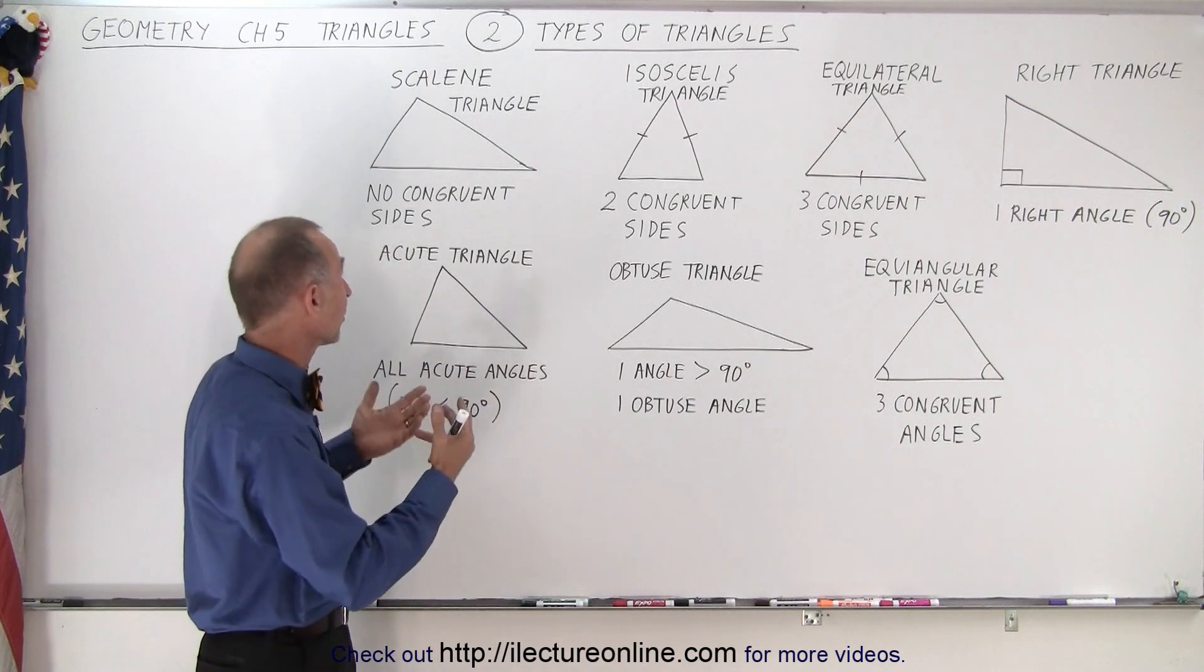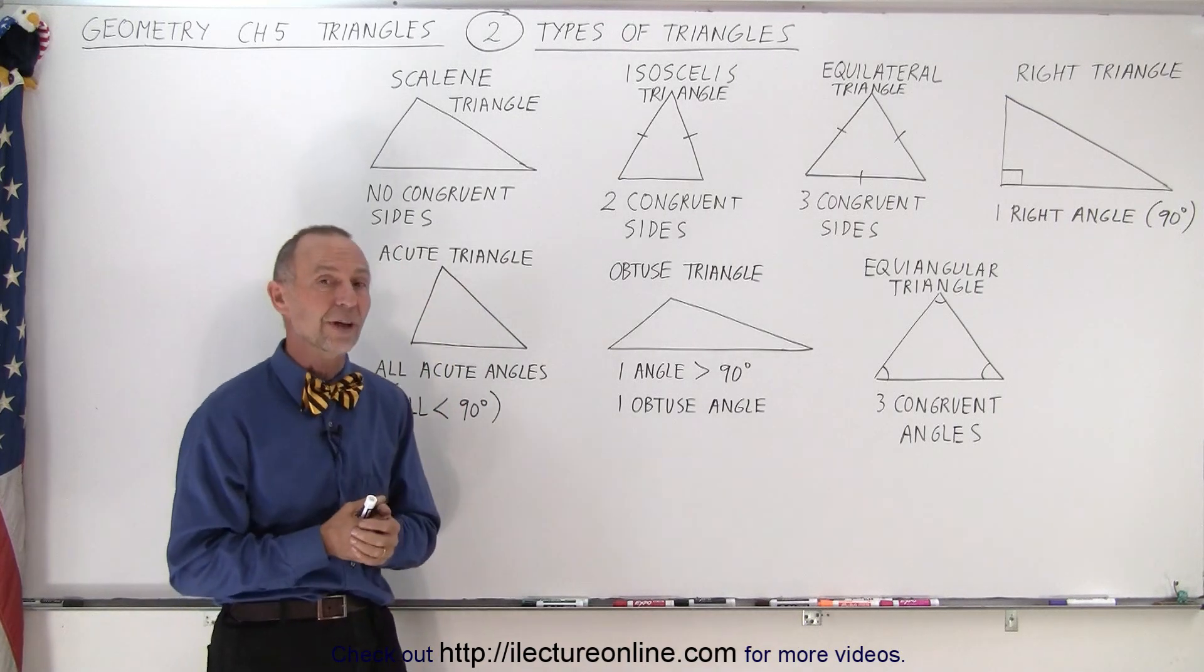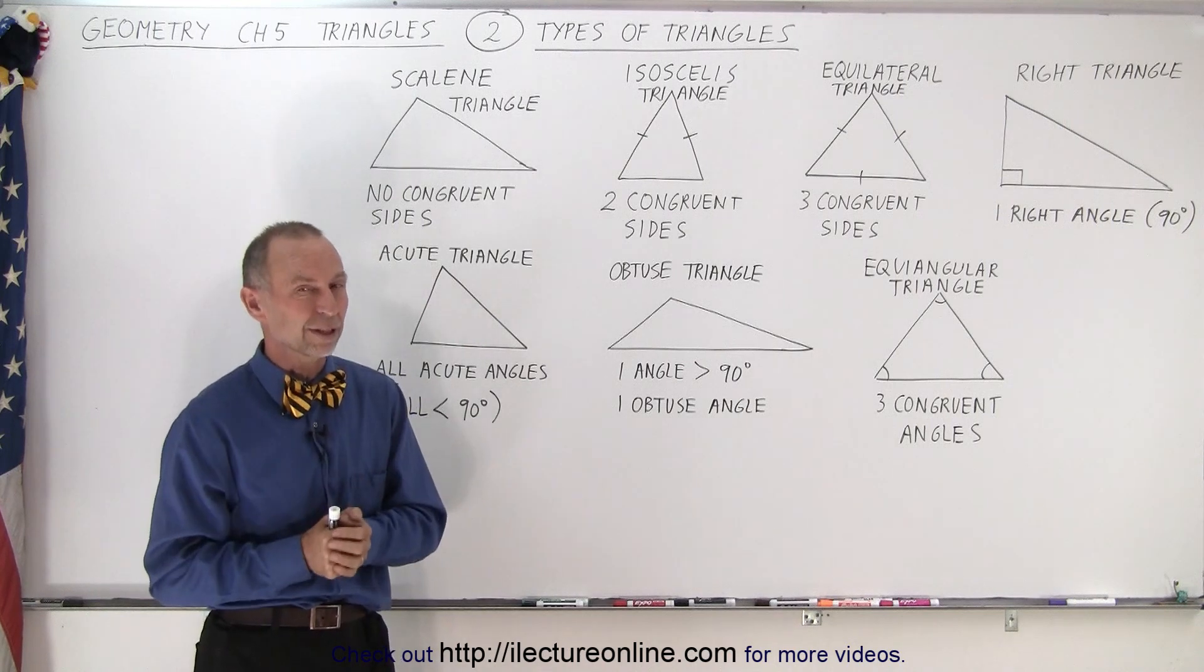For example, what does a scalene triangle mean? It simply means that there's no congruent sides. All three sides are different from one another.